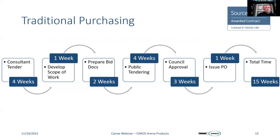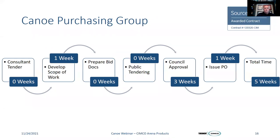For them specifically, we took what would have been: a consultant tender — about four weeks; developing the scope of work; preparing the bid document — two weeks; public tendering — four weeks; council approval — three weeks; issuing the PO — one week. What would have taken 15 weeks, going through the Canoe group, knocked 10 weeks off of the process.